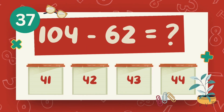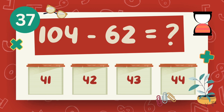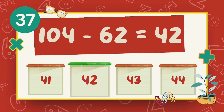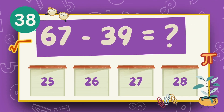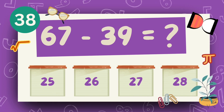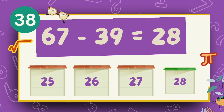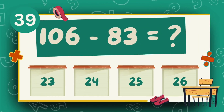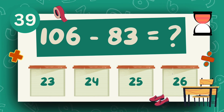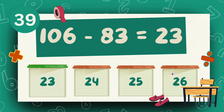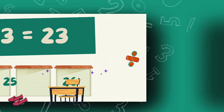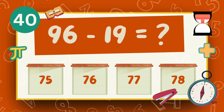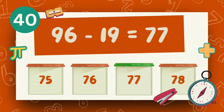What is 104 minus 62? The answer is 42. What is 67 minus 39? The answer is 28. What is 106 minus 83? The answer is 23. What is 96 minus 19? The answer is 77.